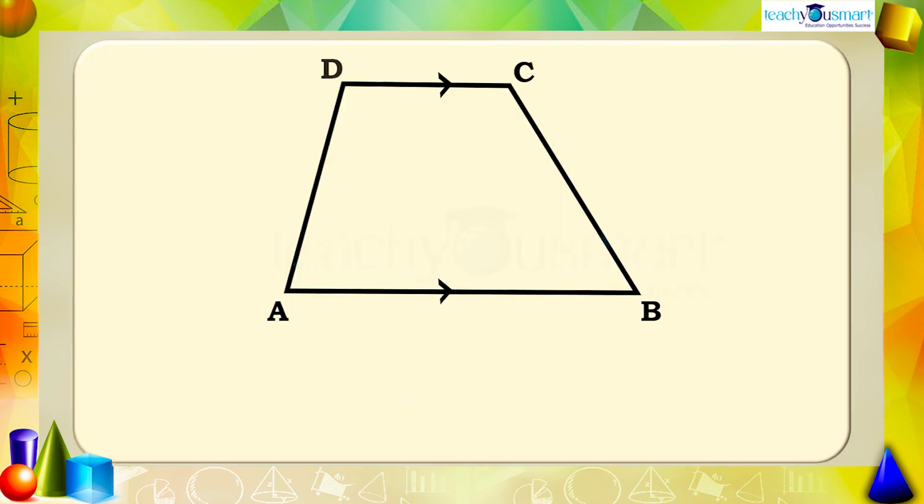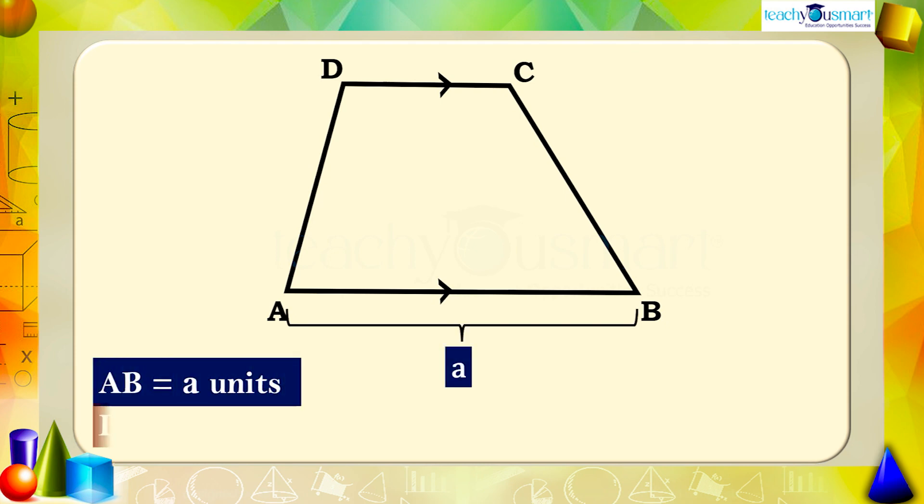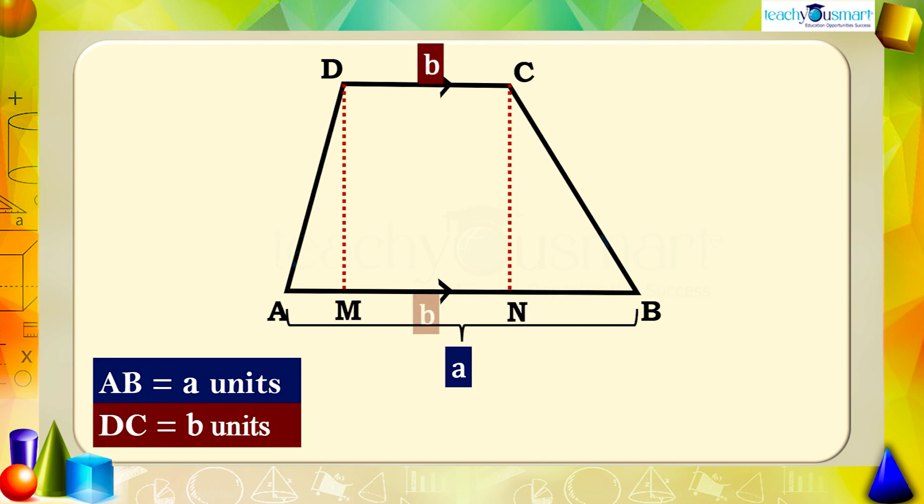Let's take a trapezium ABCD with AB parallel to DC. Let's take the length as AB equals a units and DC equals b units. The perpendicular distance between the parallel sides is height h units, that is DM equals CN equals h units.